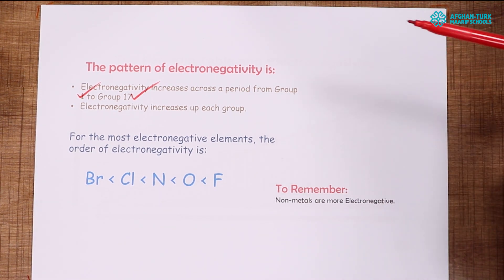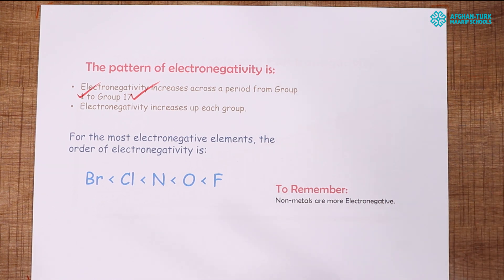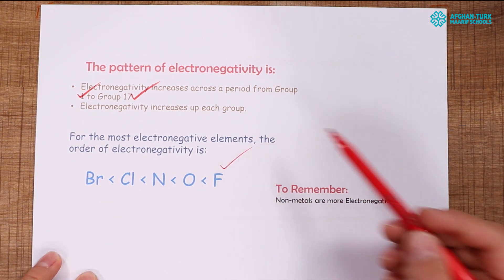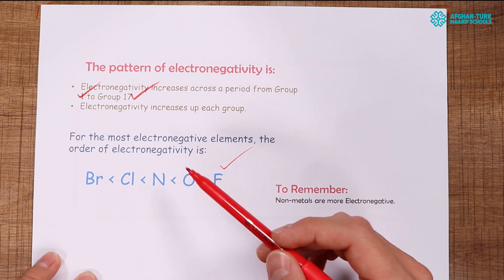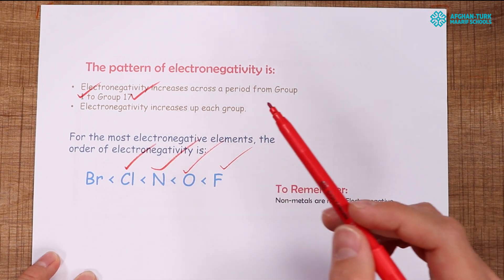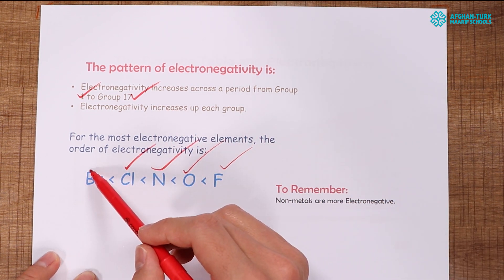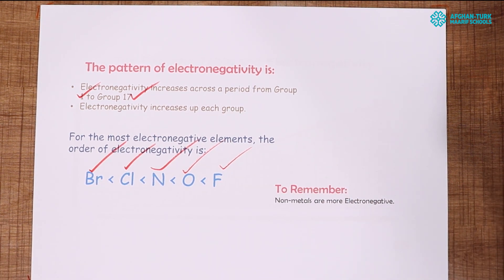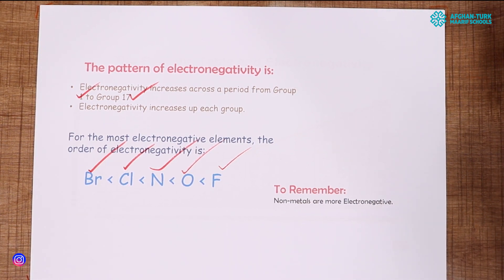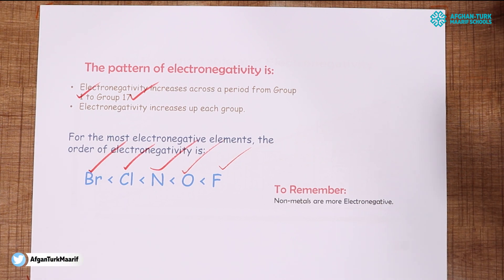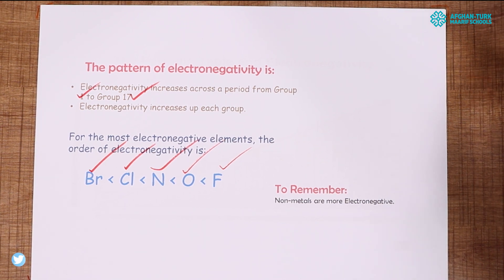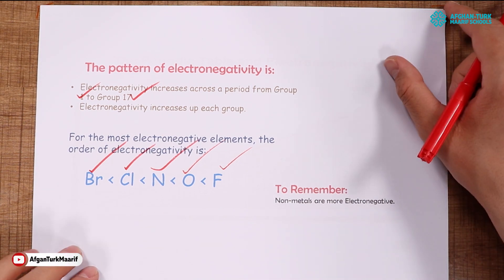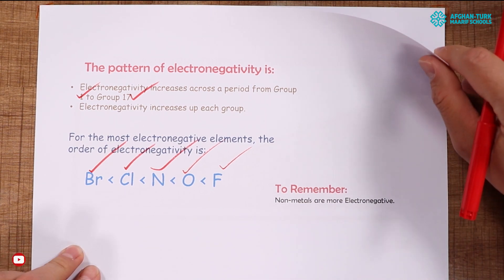The most electronegative elements are as follows: fluorine is the first, oxygen is the second, nitrogen is the third, chlorine is the fourth, and bromine is the fifth. Metals are less electronegative and non-metals are much more electronegative, because the atomic radius of non-metals is smaller than that of metals. Let's look at this trend in the periodic table.